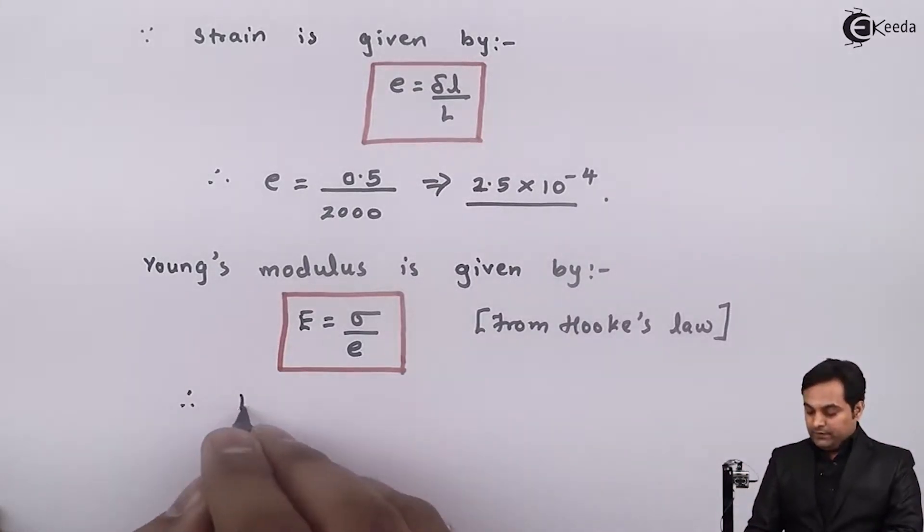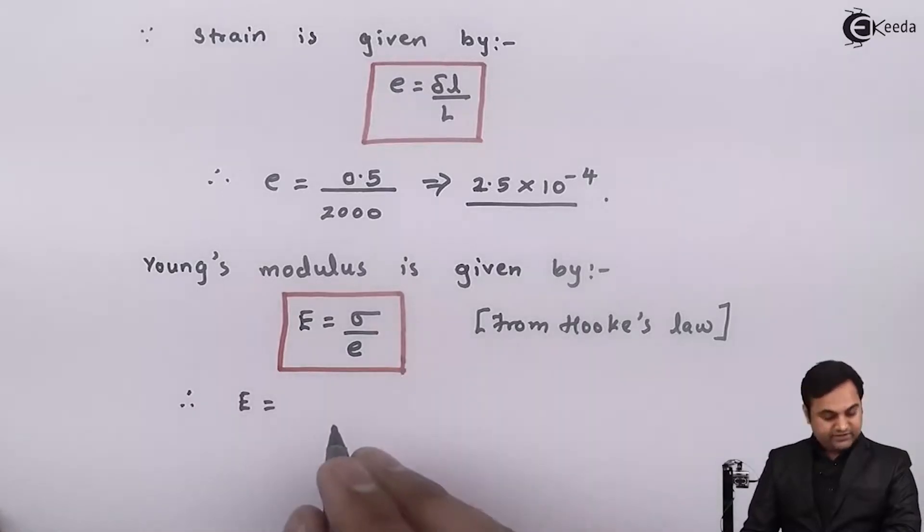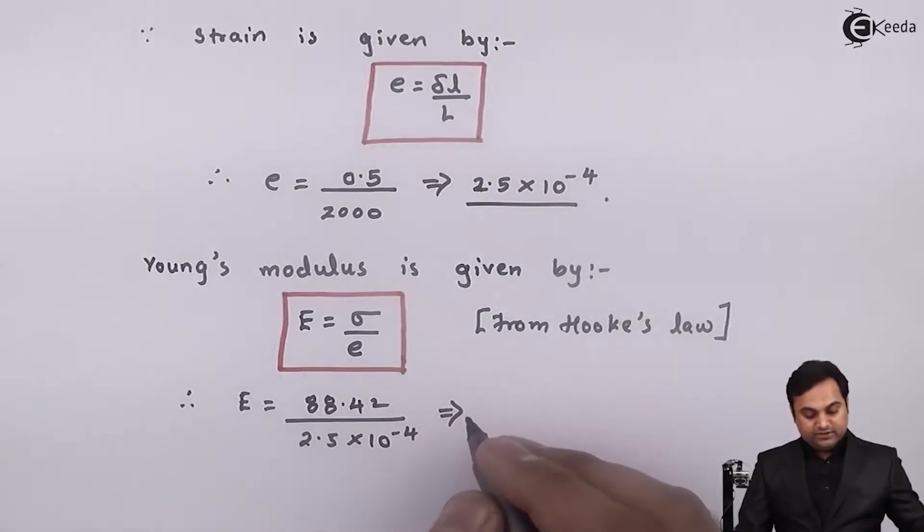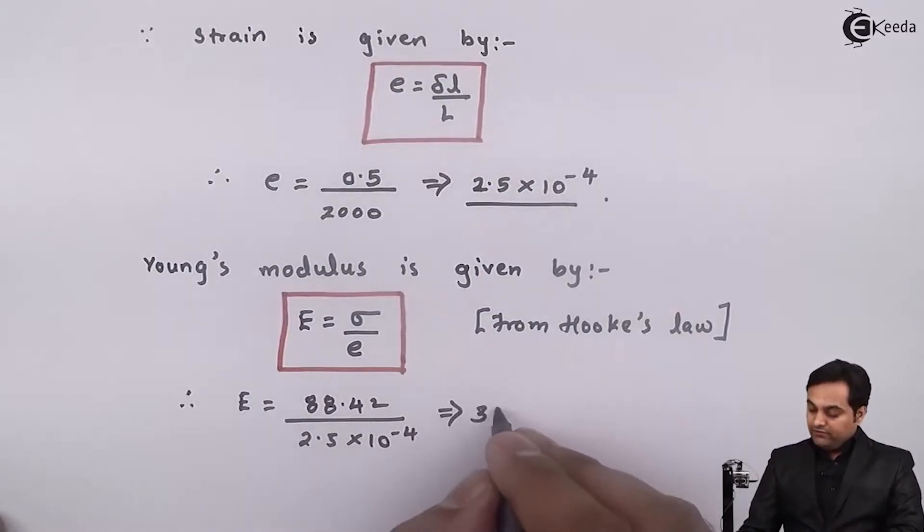So therefore capital E is equal to stress, I've got the answer as 88.42, strain 2.5×10⁻⁴. So therefore capital E it comes out to be 353.68